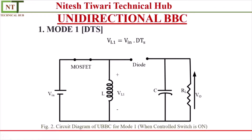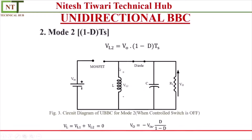In the second mode, when your controlled switch is OFF and your uncontrolled switch (diode) is ON, the inductor works as an energy source. The inductor opposes the rate of change of current — meaning the current continues flowing in the same direction. So current flows through the loop in this direction, supplying energy to the load.